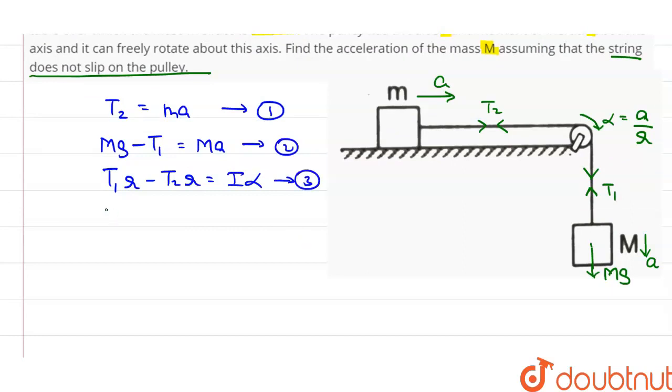So putting the values of T1 and T2, we get T1 will be equal to M into G minus A and T2 will be equal to mA. Putting this in equation 3, we get M into G minus A into R minus mA into R is equal to I into alpha.